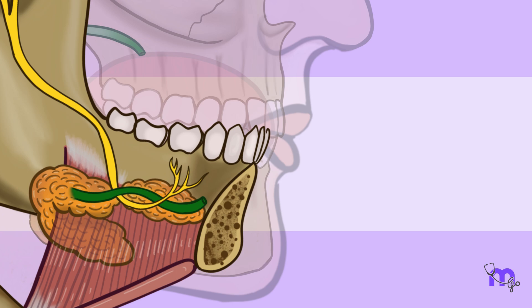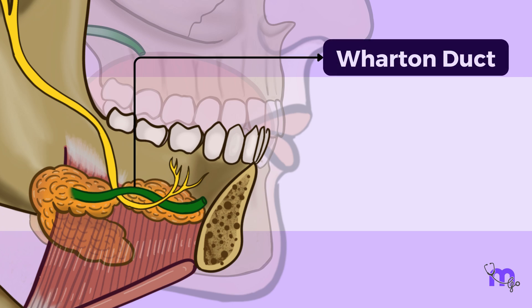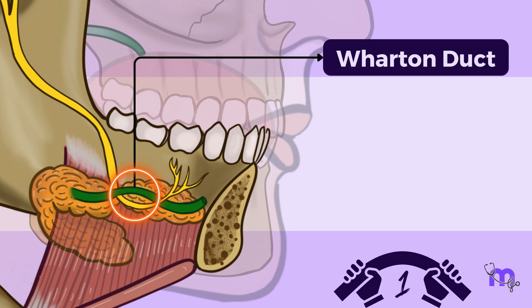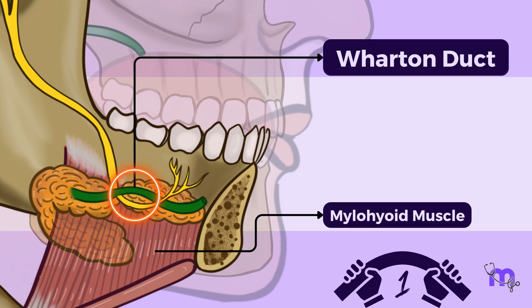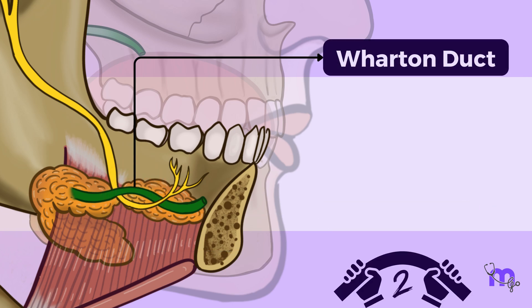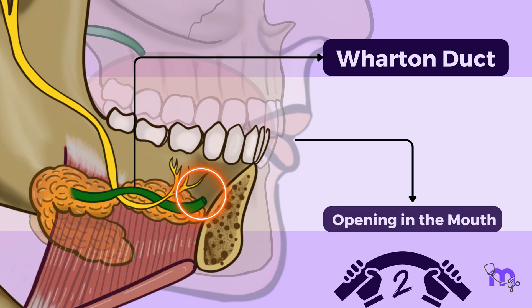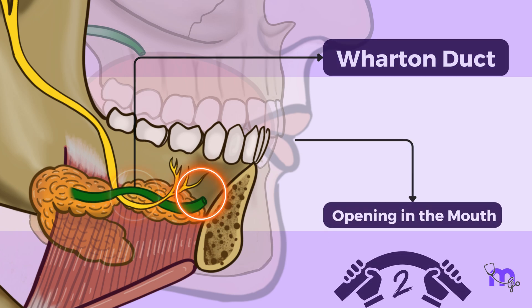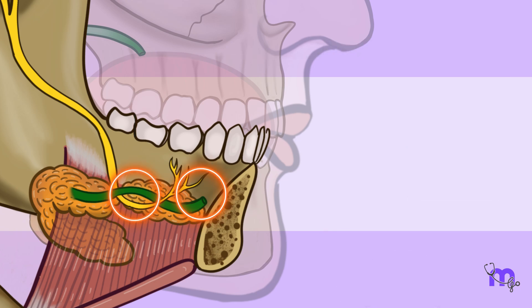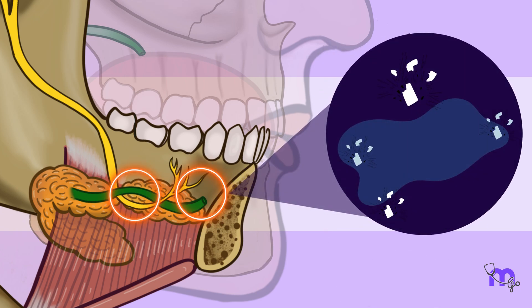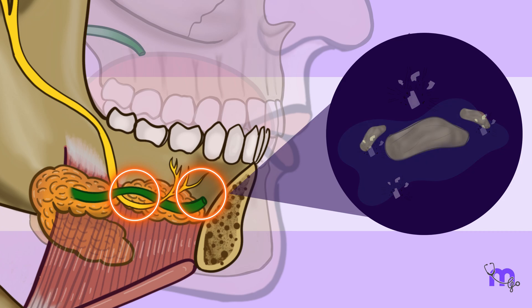Finally, the tortuous course of Wharton's duct has two sharp bends — one near the mylohyoid muscle and another close to the opening in the mouth. These bends can further trap saliva and debris, causing sialolith formation.